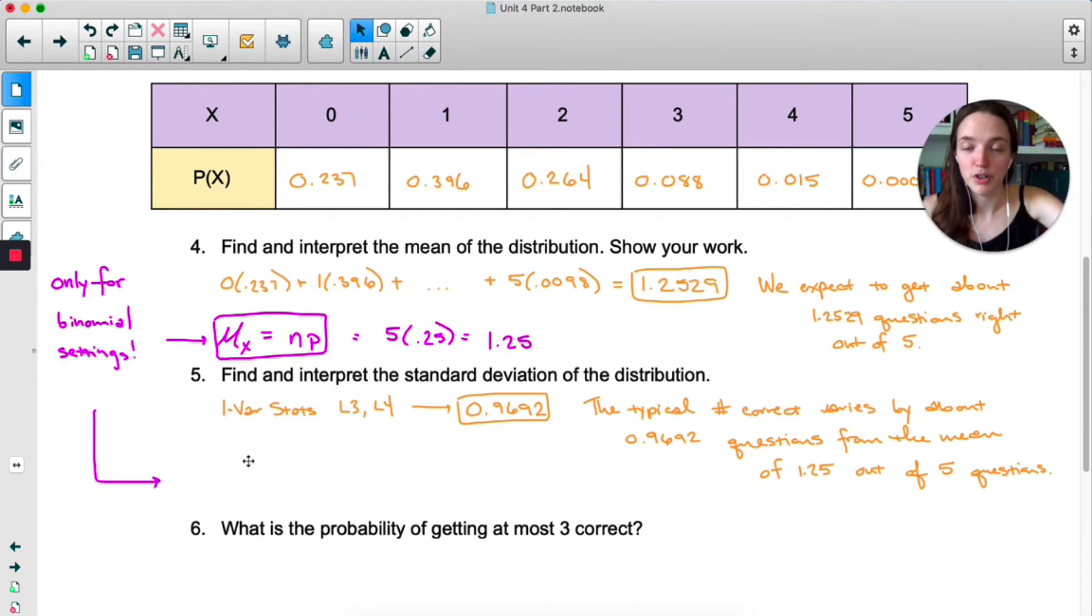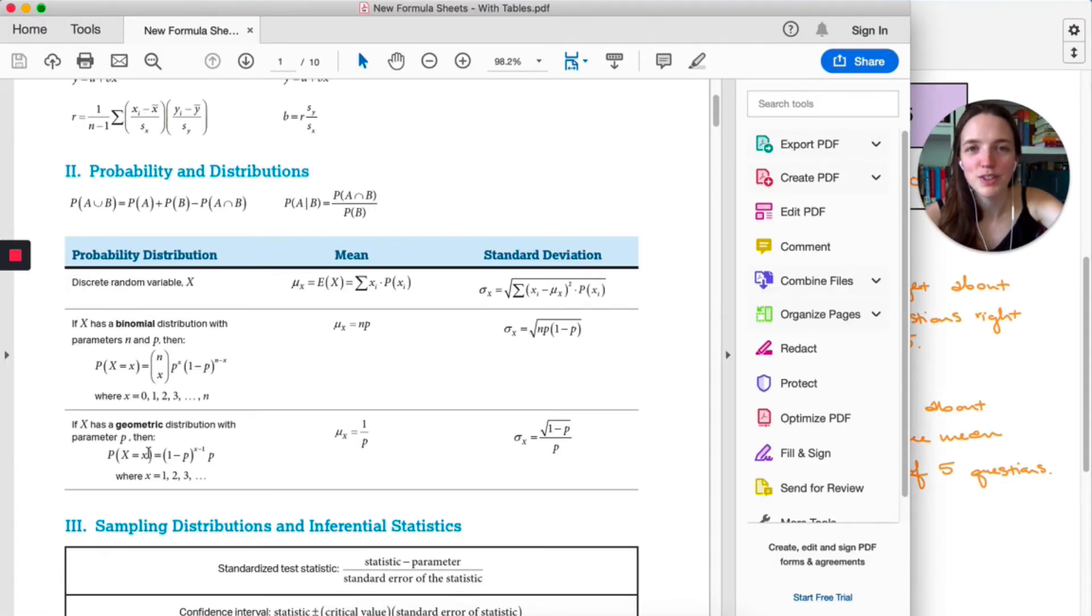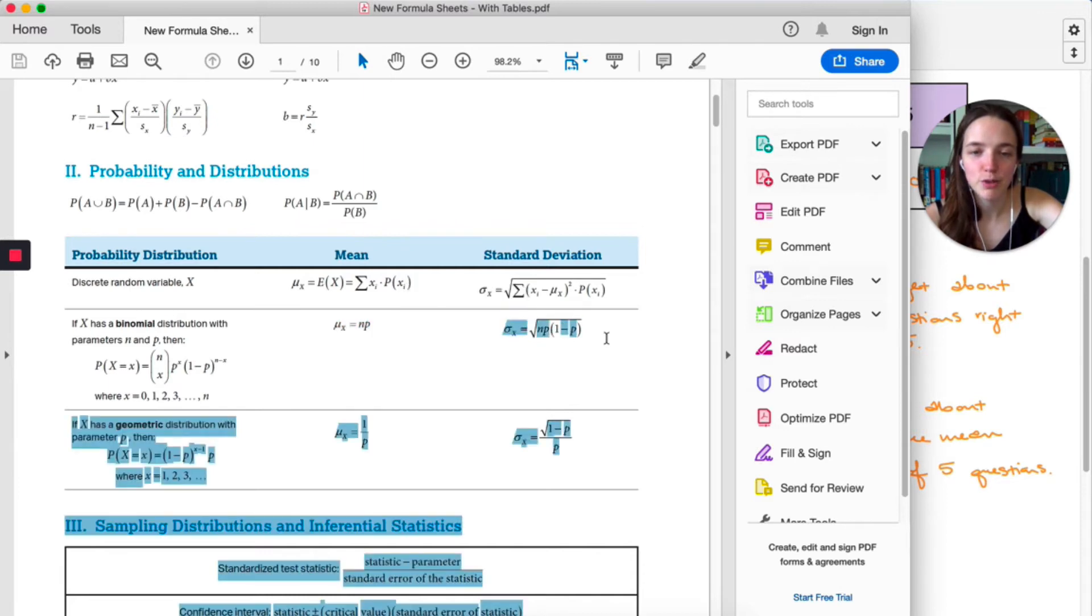Similar for standard deviation, we have a shortcut. The standard deviation of x, if x is binomial, square root n p 1 minus p. So here, that's 5 times 0.25 times 0.75. Take the square root. Look at that. You get the exact same thing. And as always, you do not have to memorize. On the formula sheet, it says if x has a binomial distribution, and it gives you the formula for mean and the formula for standard deviation. So no memorization necessary.